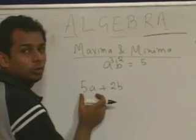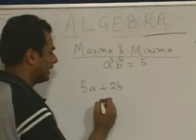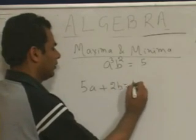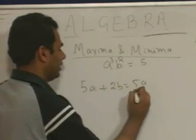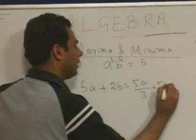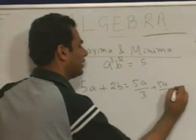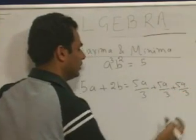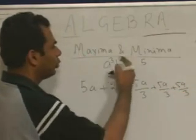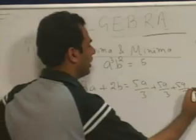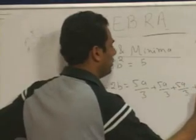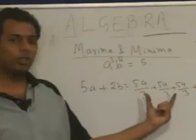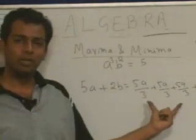Since the power of a is 3, divide 5a into 3 equal parts: 5a/3 plus 5a/3 plus 5a/3. And since the power of b is 2, divide 2b into 2 equal parts: b plus b. We are supposed to find the minimum value of this expression.